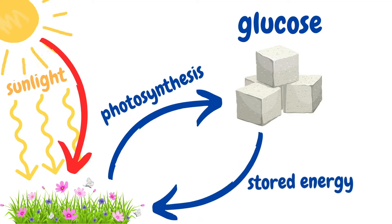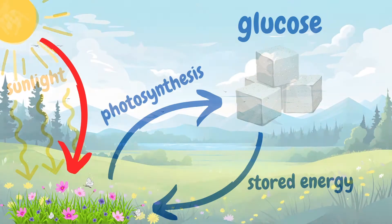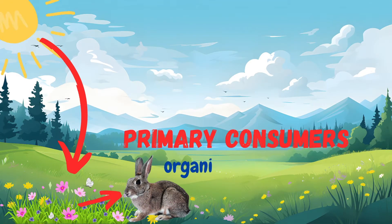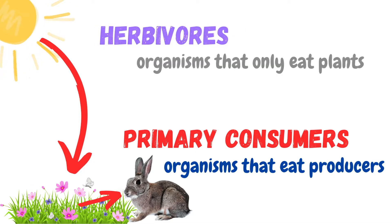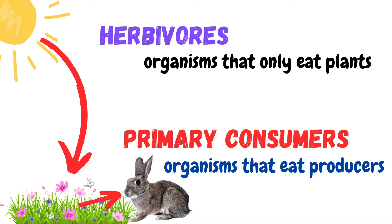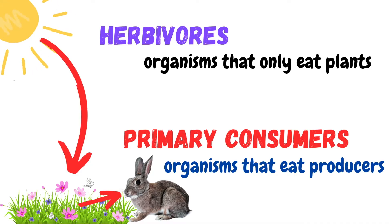This stored energy is what fuels the entire ecosystem. Primary consumers are the organisms that eat the producers. They're usually herbivores, meaning they only eat plants. These animals get their energy directly from the producers by consuming the glucose stored in plants.